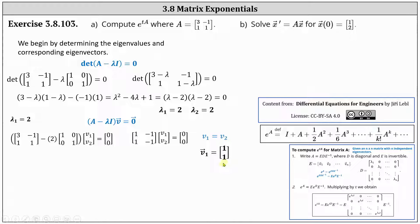At this point, we cannot find any different linearly independent eigenvectors because if we select a different V two, the eigenvector will be a scalar multiple of the eigenvector V one. This indicates the eigenvalue lambda equals two has a defect of one because it has an algebraic multiplicity of two but a geometric multiplicity of one, since we can only find one linearly independent eigenvector.